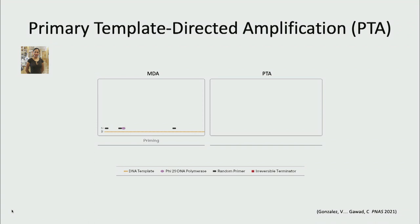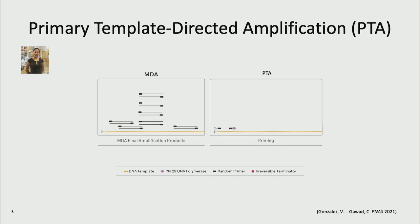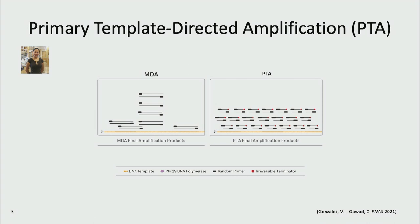The gold standard for a long time has been MDA, invented about 20 years ago. It involves random priming, the special polymerase Phi-29, which is very processive — goes on for a long time, can displace the strand in front of it, and has a very low error rate. But wherever it starts, you get a 'jackpotting' effect, where you get a lot of amplification in that region but less in neighboring regions primed later. The thought was: what if we control the kinetics of the reaction? Take advantage of strand displacement and low error rate, but don't let it be so processive — allowing priming to occur in other areas, leading to smaller amplicons covering the genome more uniformly.